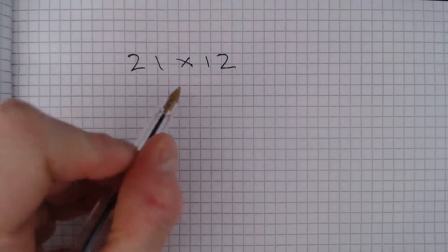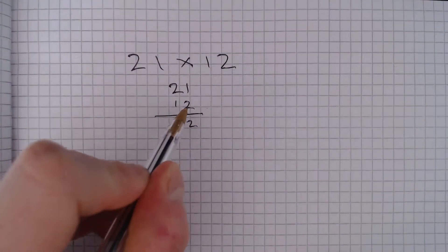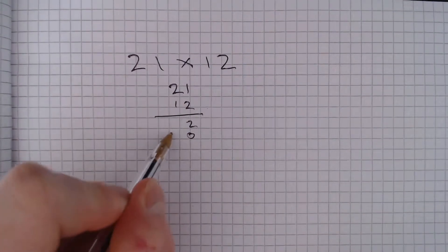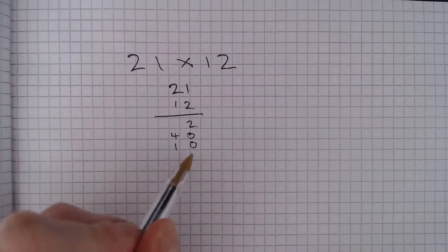So we could do this in a grid. We'll get 21 multiplied by 12, 2 ones are 2, 2 twos are 4 with a 0, 1 one is 1 with a 0, and 1 two is 2 with 2 zeros.